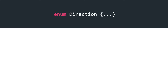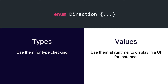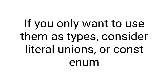Here we have the enum Direction. In the world of types, we use enums for type checking to ensure that something has the type enum. In the world of values, we use them at runtime to, for instance, display something in the user interface. So if you only want to ever use enums as types, consider using literal unions instead. Literal unions are only available in the world of types and they are completely removed at runtime.